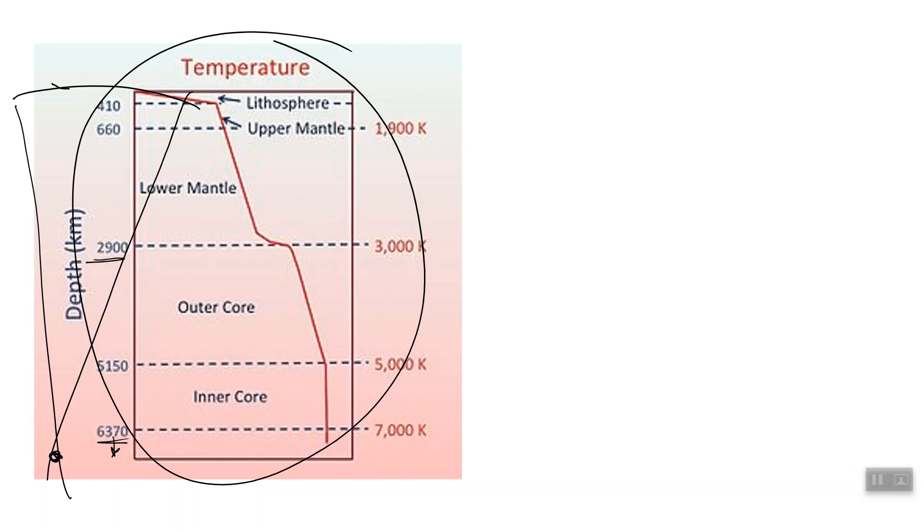But this shows you how it changes. Some important facts first. There are 10 to the 31 joules of energy available inside of the earth. That is just an unbelievable number. One we can't even comprehend or figure out what that means. The earth's core is at 7,000 degrees Kelvin.